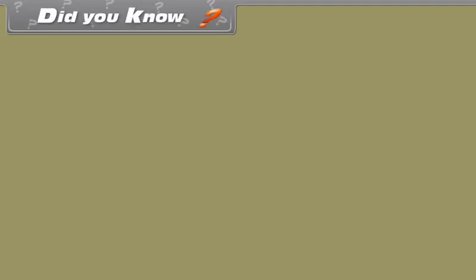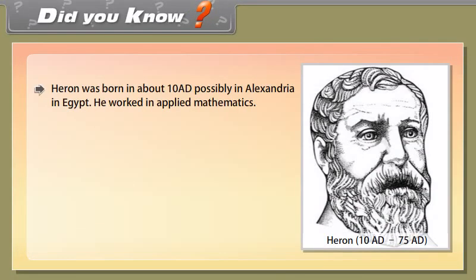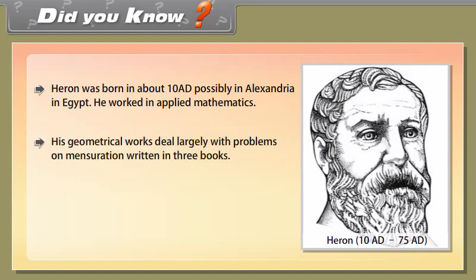Did you know? Heron was born around 10 AD, possibly in Alexandria, Egypt. He worked in applied mathematics. His geometrical works deal largely with problems on mensuration, written in three books. In these books, Heron derived the famous formula for the area of a triangle in terms of its three sides.